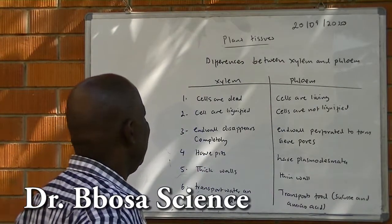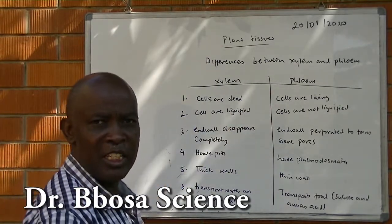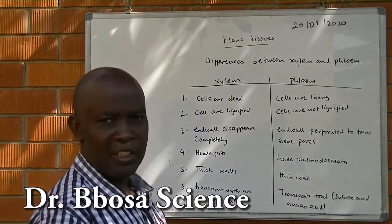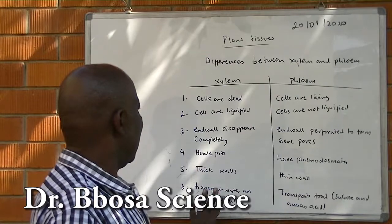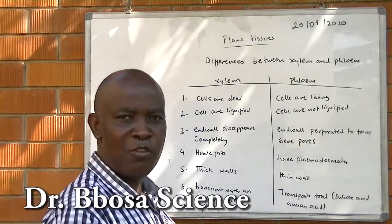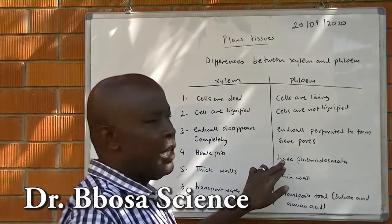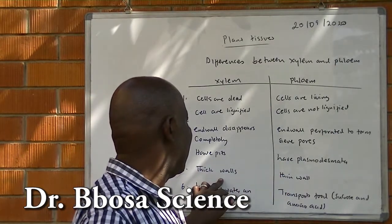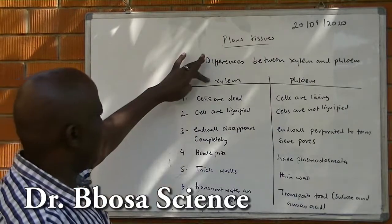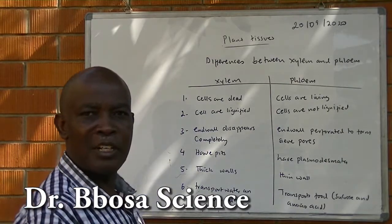Differences between xylem and phloem. Xylem is made of dead cells; phloem is made of living cells. Two, the cells are lignified in xylem; in phloem, the cells are not lignified. In xylem, the end walls disappear completely; in phloem, the end wall is only perforated to form sieve pores. Xylem has pits; phloem has plasmodesmata. Xylem cells have thick walls; phloem cells have thin walls. Xylem transports water and mineral salts; phloem transports food — that is sucrose and amino acids.